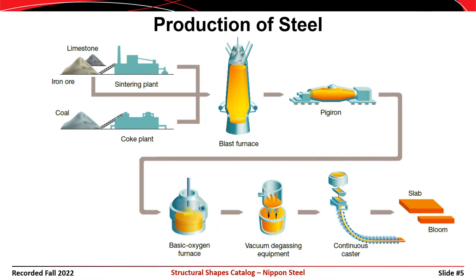This image from a Nippon Steel catalog conveys largely the same information. Raw materials go into a sintering plant — iron ore and limestone. Sintering takes powdered or pulverized material and makes granular material out of it, coming out like gravel. Coal goes into a coke plant, where it's baked down to coke that burns hotter than coal. These are fed into a blast furnace, producing pig iron. The pig iron goes into a basic oxygen furnace, combined with alloying elements, then into a continuous caster, resulting in rough sections like a slab or bloom.